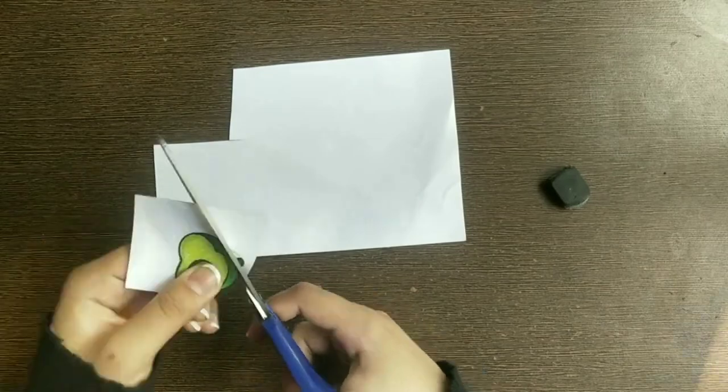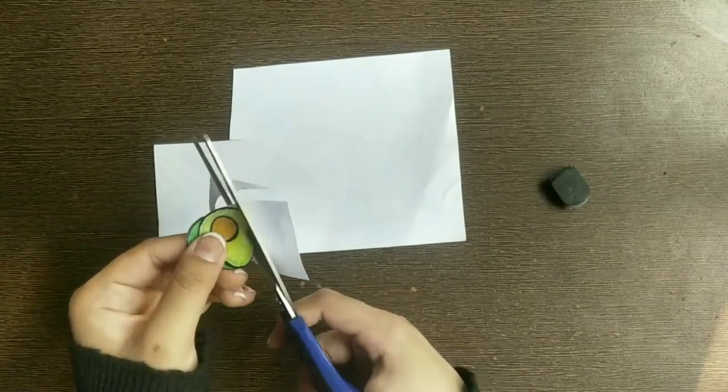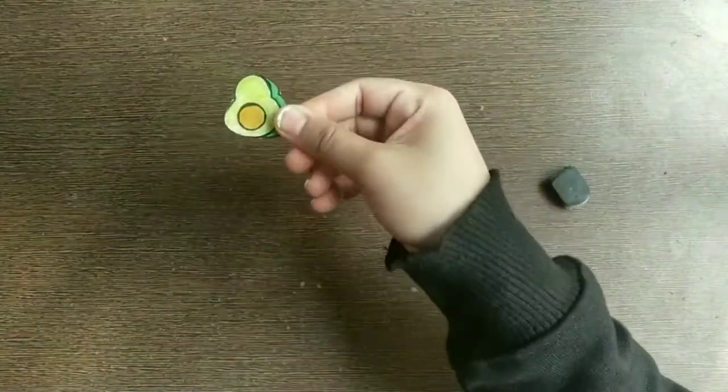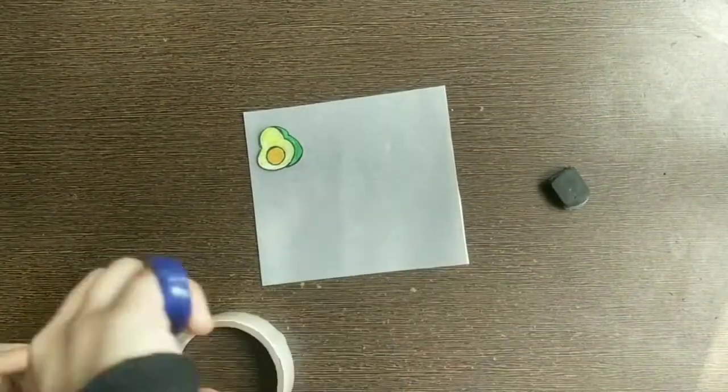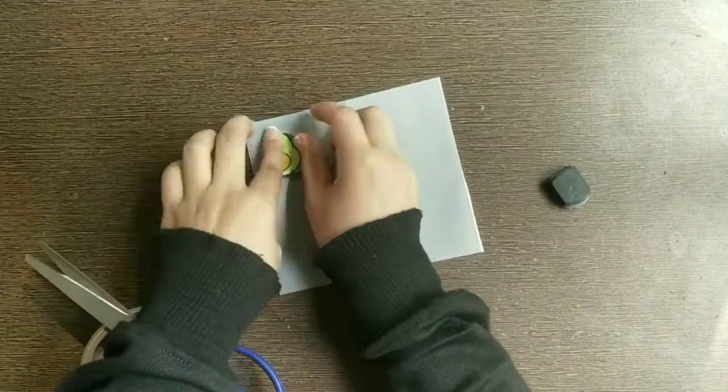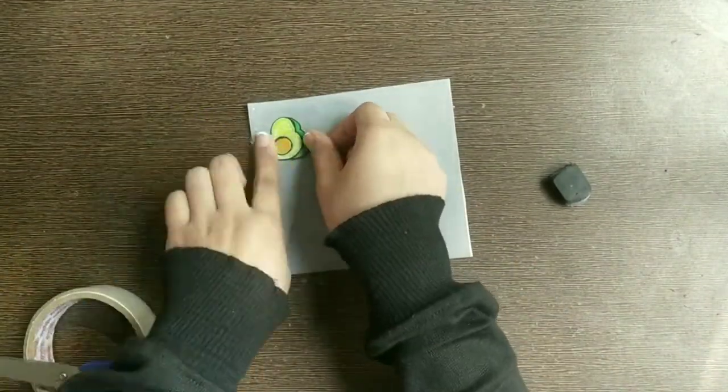After that I am cutting it out neatly from the paper and I am using a wax paper, and then my avocado, and then a layer of tape. Make sure to overlap it every time.